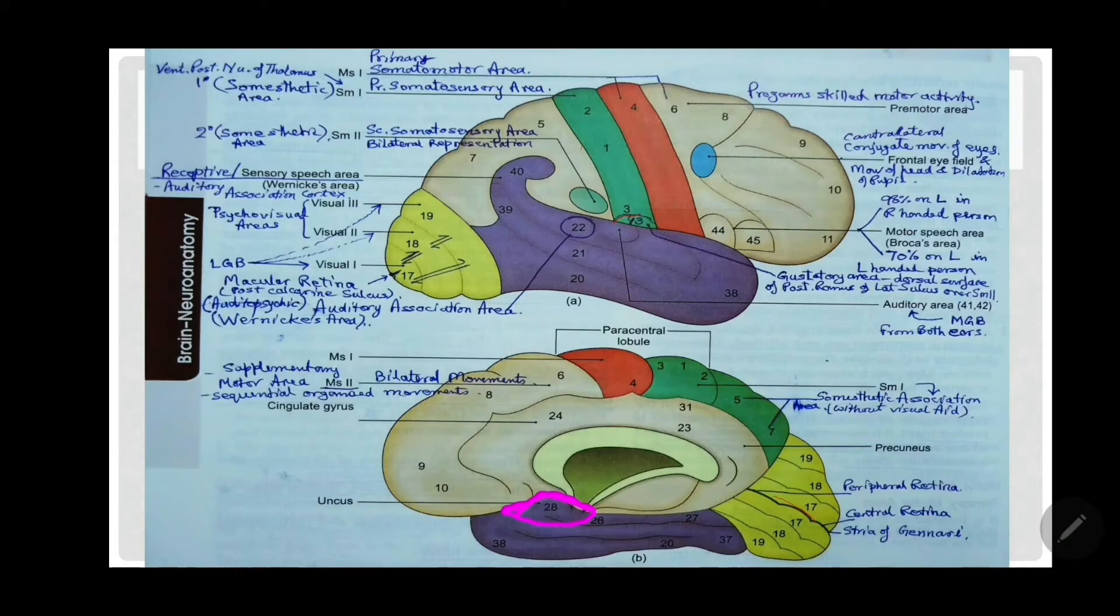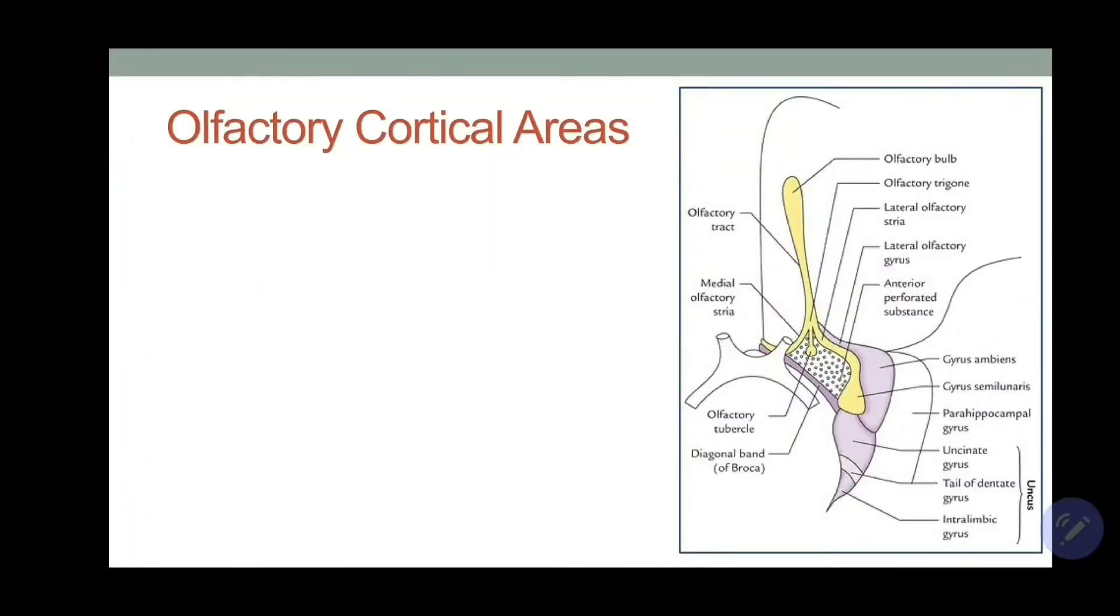So this is about the sense of olfaction. Now the olfactory cortical areas, you can see this olfactory tract, this is the medial and lateral olfactory striae, and an intermediate olfactory stria which reaches into the olfactory tubercle. The lateral olfactory stria reaches to the gyrus semilunaris, and this is the anterior perforated substance.